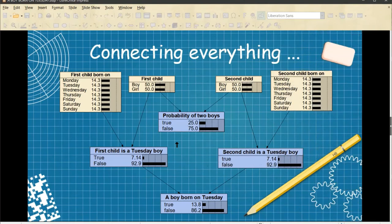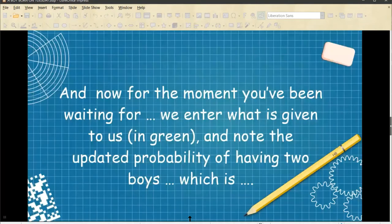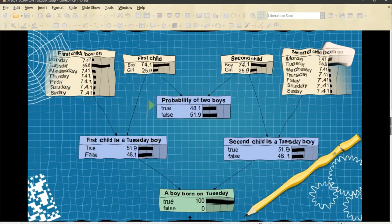Now, we connect everything. And we've got our Bayesian network. Now, we need to enter our actual finding, namely the actual fact that we have been told that this family does in fact have at least one boy born on Tuesday. And that we will enter over here. So, for the moments now that you've been waiting for, we are going to enter, it'll be in green, and we will note the updated probability of having two boys, which is as follows.